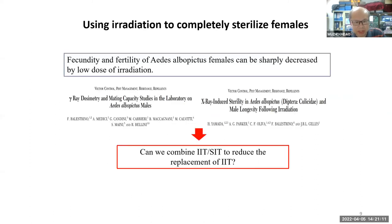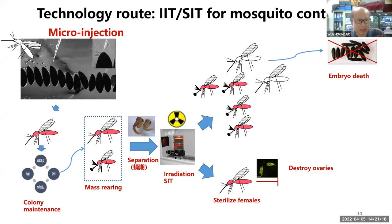So we developed a new approach by combining the two technologies: IIT and SIT. In the laboratory, we use microinjection to produce a CI strain, and then mass-rear the insects and perform sex separation to separate males and females at the larval stage.